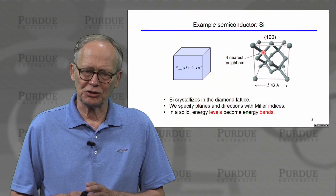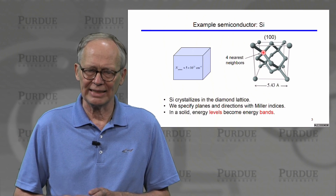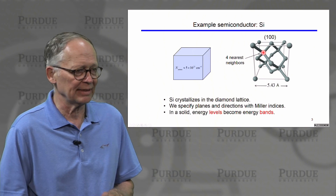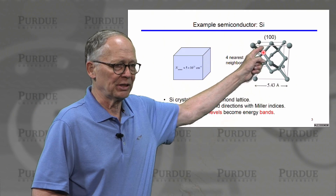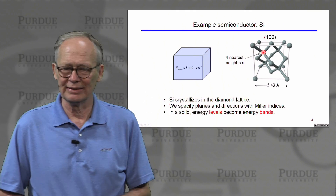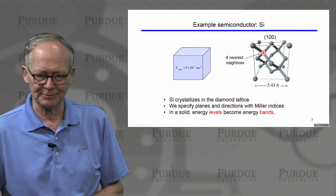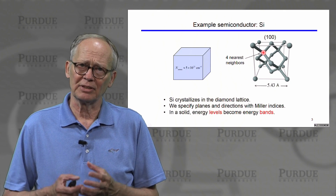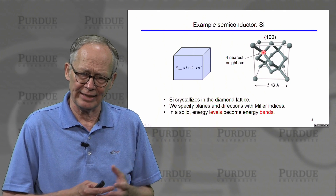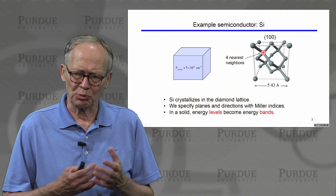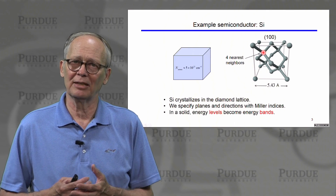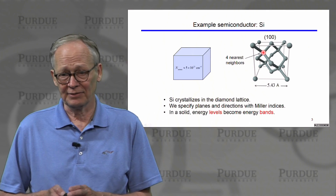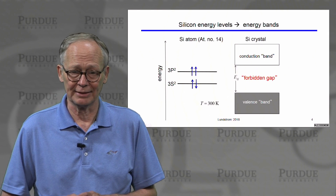We specify various directions and planes in the silicon lattice with Miller indices. For example, this particular plane on the top is a 1, 0, 0 plane. In a solid, the energy levels of the discrete silicon atoms broaden and smear out and become energy bands, and the important bands are the valence and conduction bands.